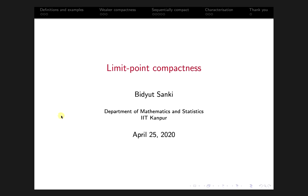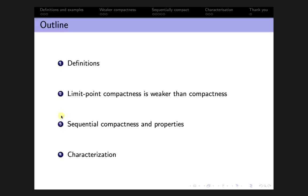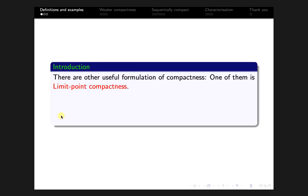Here we discuss limit point compactness. We already know what compact topological spaces are — a topological space X is called compact if every open cover of X has a finite subcover. The outline covers: definitions, limit point compactness, which is weaker than compactness, sequential compactness, and its properties and characterization theory.